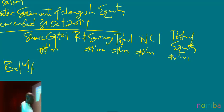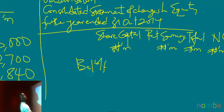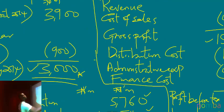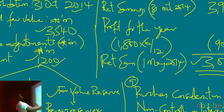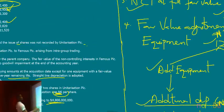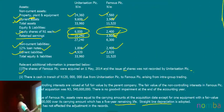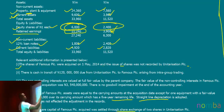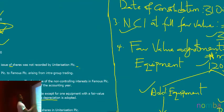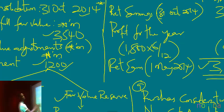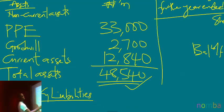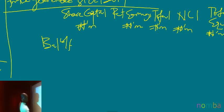For share capital, the balance at 1st November 2013 — you simply get it from the question — and that would be that of the parent, which is 6,000. So I'll put 6,000 in my statement of changes in equity.